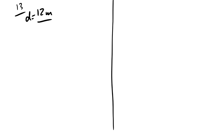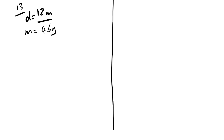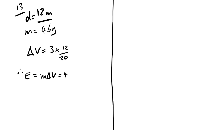Question 13: an object is moved from P to Q — that's 12 metres vertically. Mass = 4 kg. The total change in potential over 20 m is 3 J/kg, so the change over 12 m is 3 × 12/20 J/kg. Work done = mΔV = 4 × 3 × (12/20) = 7.2 J. Answer is A.